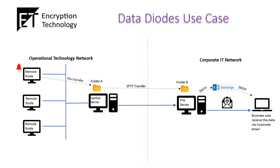but the connection between the operational technology and corporate IT networks poses a potential security threat to both networks. Sensitive data in the corporate IT network could potentially get leaked into the operational technology network. The operational technology network is also subjected to malware or virus attacks coming from the corporate IT network, or vice versa.